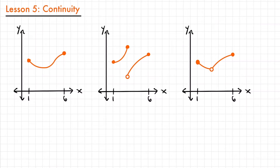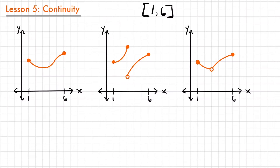Let's take a look at these three graphs to get an idea of what continuity means. We'll consider the interval from one through six on the three graphs below. If you're not familiar with this notation, it means we're looking at the x values from one through six, including one and six — that's what these brackets mean — including the endpoints as well as all of the numbers in between.